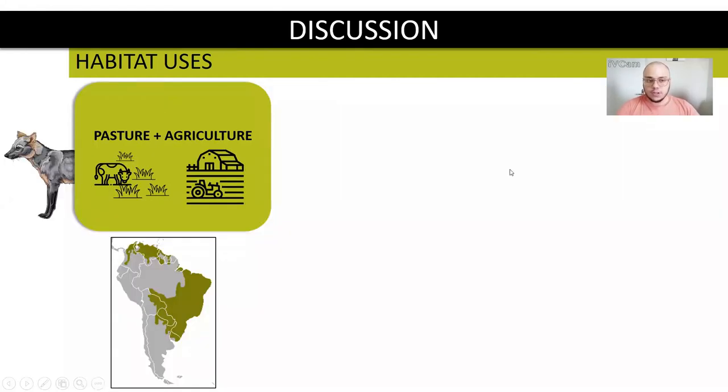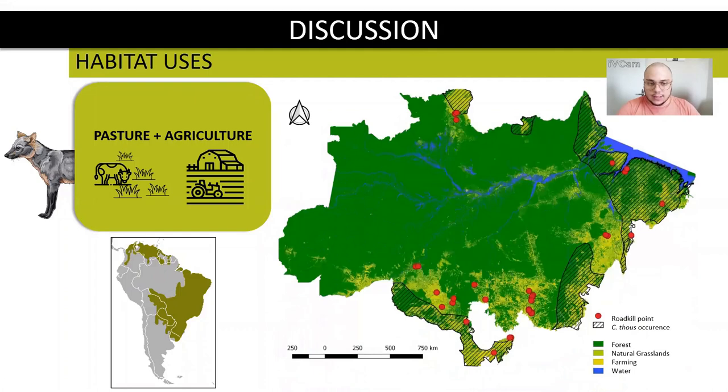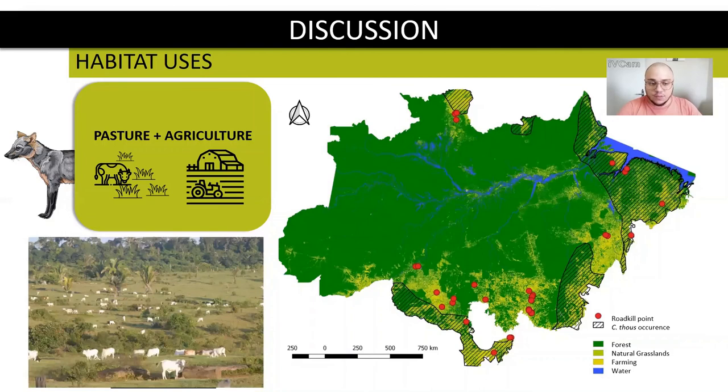Back to Cerdocyon thous, if we analyze the species range, we can notice that it occurs in the entire territory, with exception of the center of Amazon rainforest. Our roadkill data shows that the species is being road killed out of its original home range, in regions of the Amazon that have already been converted to pasture and agriculture. What can be related with this savanization phenomena of Amazon forest by cattle production.